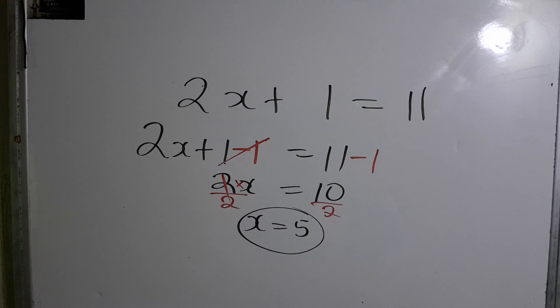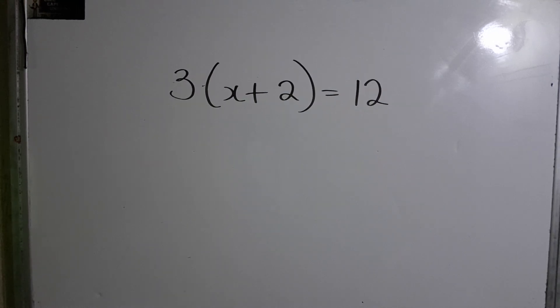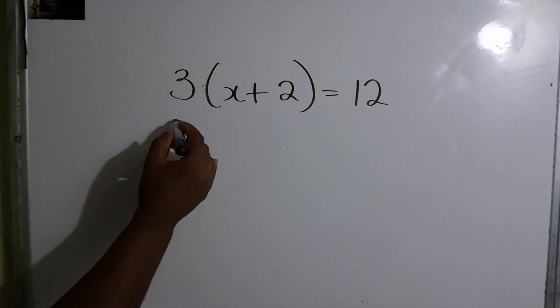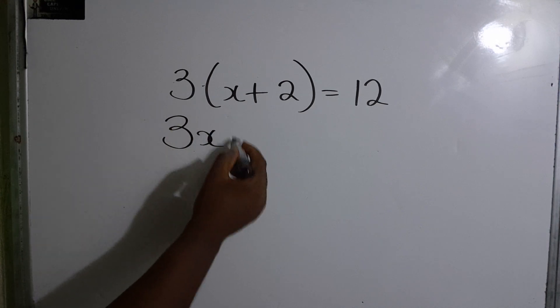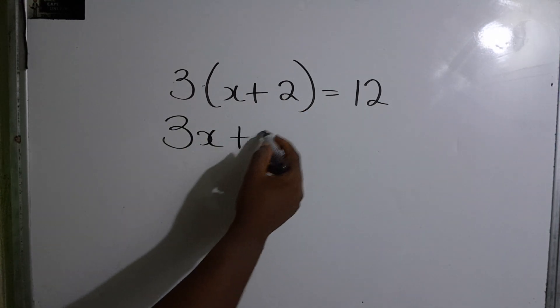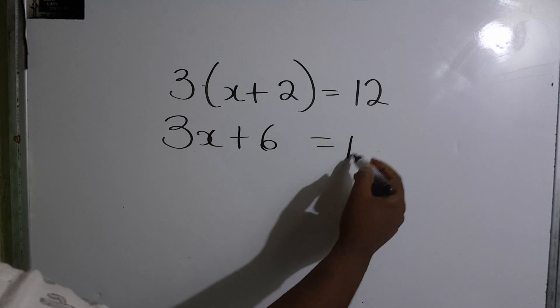Let's look at another. This one involves a bracket. The bracket means to multiply, so let's multiply. It will be 3 times x which is 3x, 3 times 2 which is 6, and that must equal to 12.